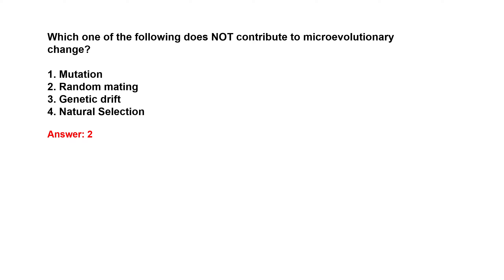Next: which of the following does not contribute to micro-evolutionary changes? The options are mutations, random mating, genetic drift, and natural selection. The right answer is random mating – it does not contribute to micro-evolutionary change. The other three options – mutations, genetic drift, and natural selection – do contribute to micro-evolutionary changes.